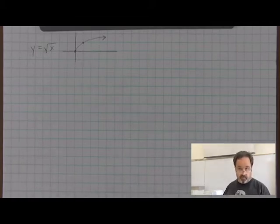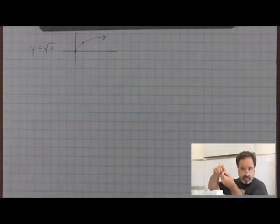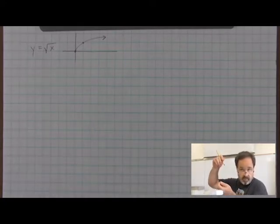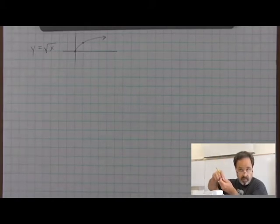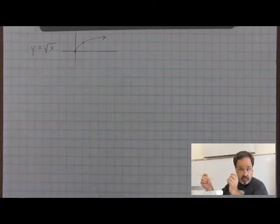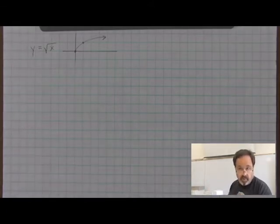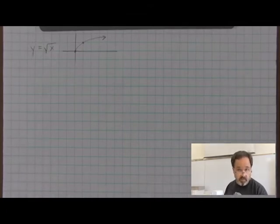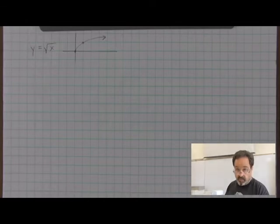We can also stretch and compress on both axes. We can take vertical distances and stretch them to make them longer, or compress them to make them shorter. Horizontally, we can stretch and compress as well. In general, we call the things that distort the shape of functions dilations.